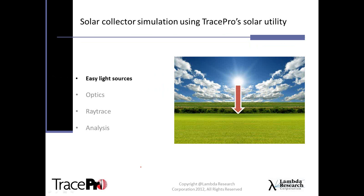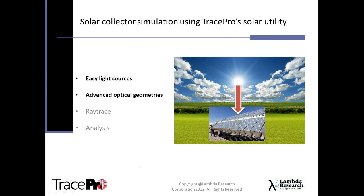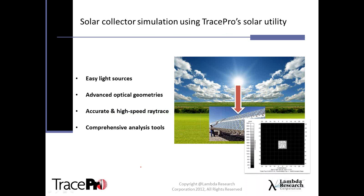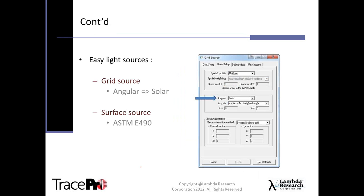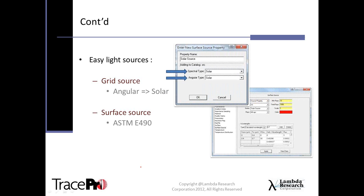There are two easy light sources you can use in TracePro. You can use the grid source, which has a built-in beam setup of an angular solar-type configuration with uniform flux and weighted angle. You can also use a surface source, which is the spectral-type solar with angular-type solar setup. You would then set up calculated wavelengths, most likely in the visible — from 0.4 to 0.7 — with a whole bunch of samples, and the program will automatically set up the flux and have that source ready for ray tracing.